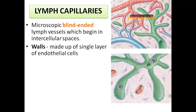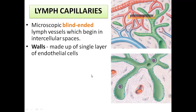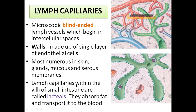When you compare with the previous class where you studied the microscopic structure of arteries and veins — tunica intima, media, and adventitia — the wall of those blood vessels is quite thick. But the wall of the lymphatic vessel is made up of only a single layer of endothelial cells, making it the thinnest of all three. Lymph capillaries are most numerous in skin, glands, and mucous and serous membranes. Lymph capillaries within the villi of the small intestine are given a special name — they are called lacteals, and they absorb fat and transport it into the blood circulation.